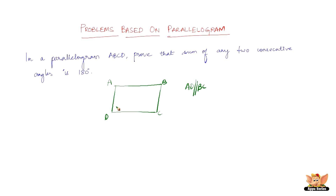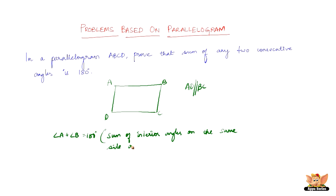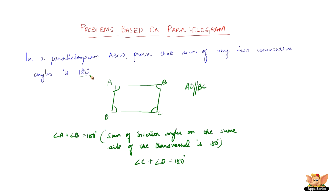Based on that, we have angle A plus angle B equal to 180 degrees. Why is that? Because the sum of interior angles on the same side of the transversal is 180 degrees. Therefore, angle A plus angle B equals 180 degrees, and angle C plus angle D is also equal to 180 degrees. By this, we prove that the sum of any two consecutive angles in a parallelogram is 180 degrees.